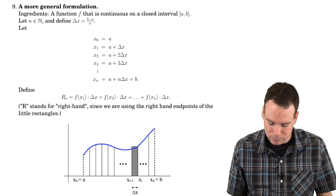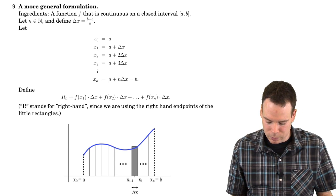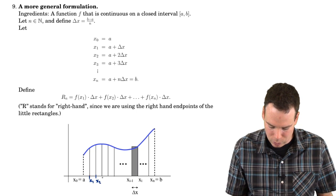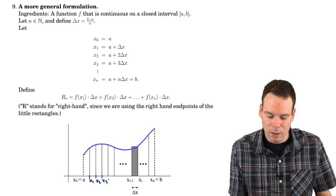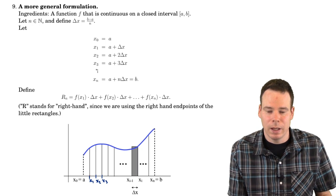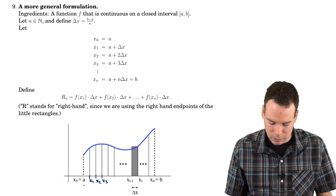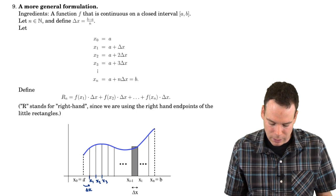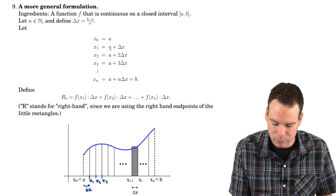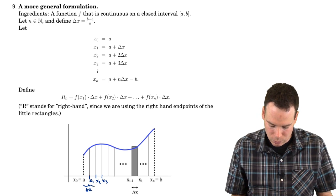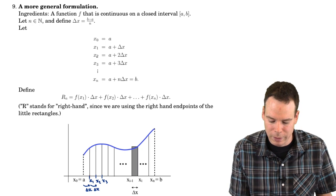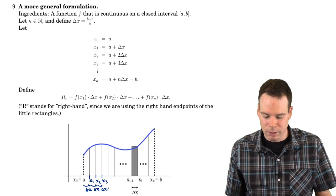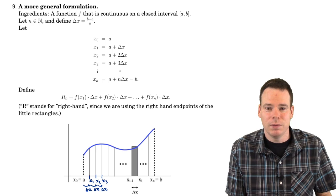Looking at the picture, we have our intervals and x values: x sub 1, x sub 2, x sub 3, and so on. What are the values of these endpoints? Well, x sub 0 is a. To get to x1, we jump over one delta x, so x1 is a plus delta x. x2 is a plus 2 delta x, and so on — we just keep adding delta x to get to the next x_i value.